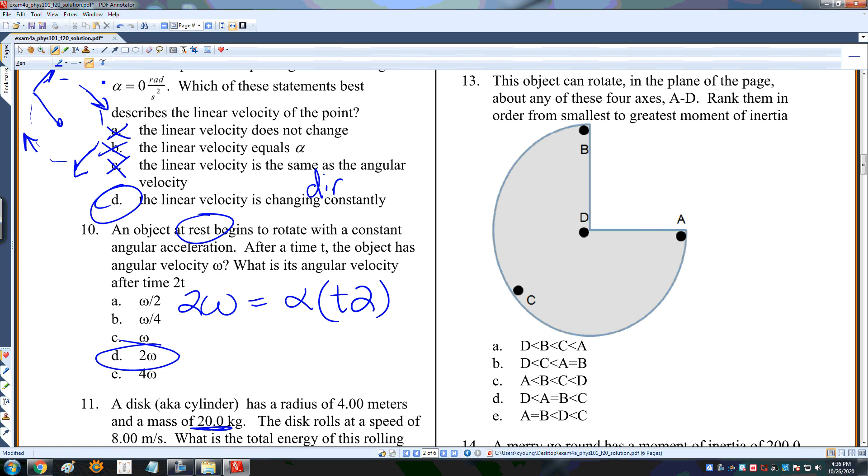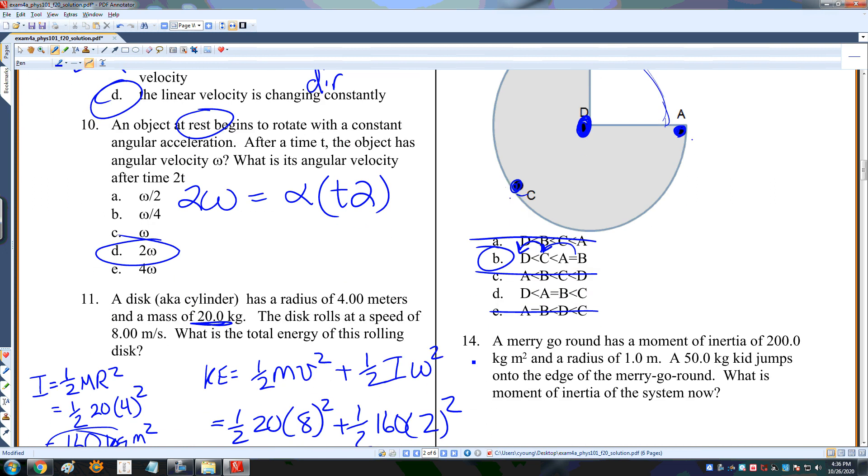This object can rotate, rank the moments of inertia from smallest to greatest. It has the smallest moment of inertia at D. A and B are symmetrical, so those two are equal. The question is, is C bigger or smaller than A and B? C has a lot of mass missing at big radii. A and B have more mass at big radii, so A and B have a bigger moment of inertia. They're bigger than C, which is bigger than D. So B is the right answer.